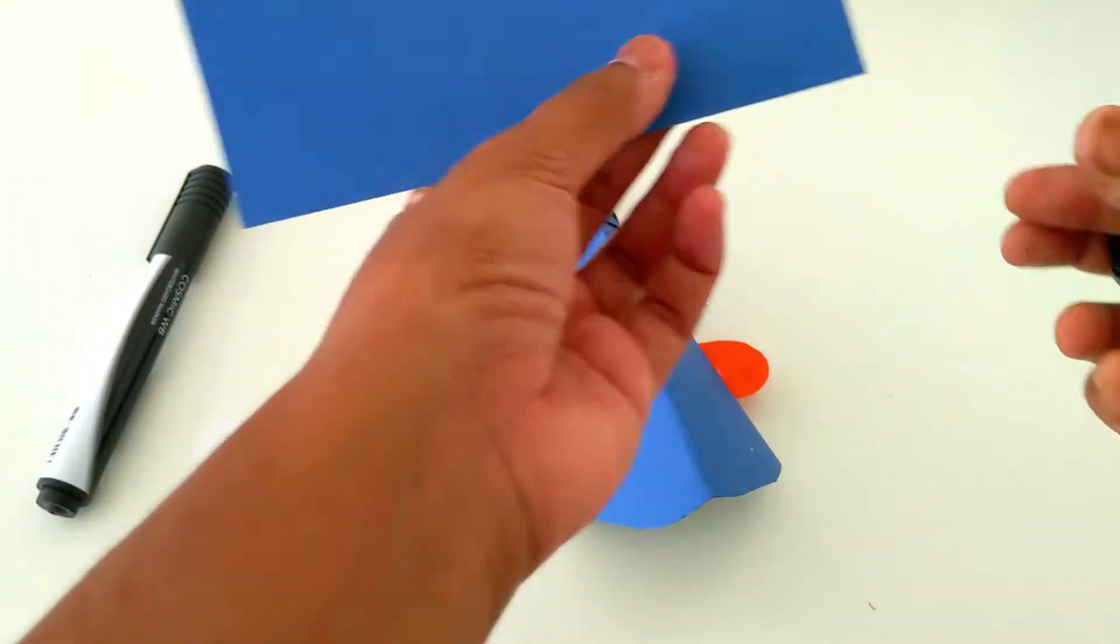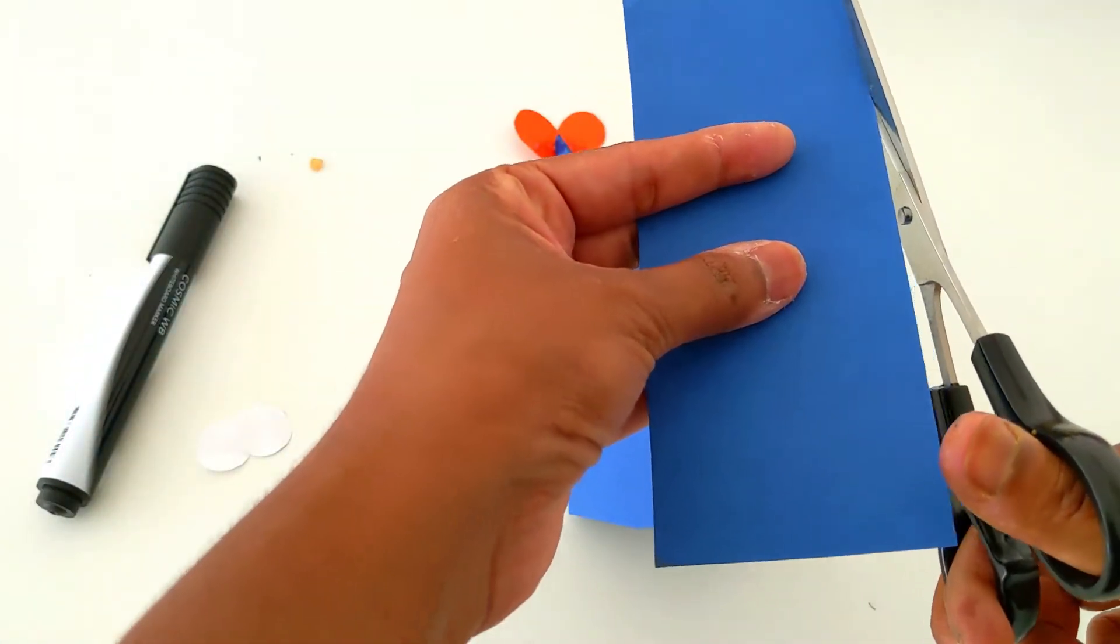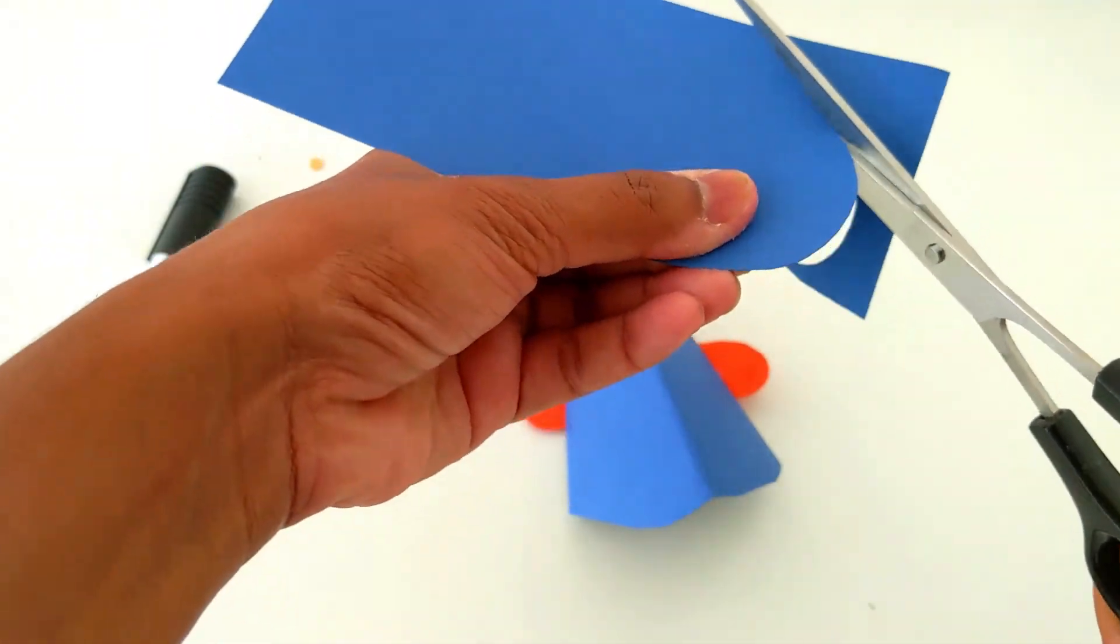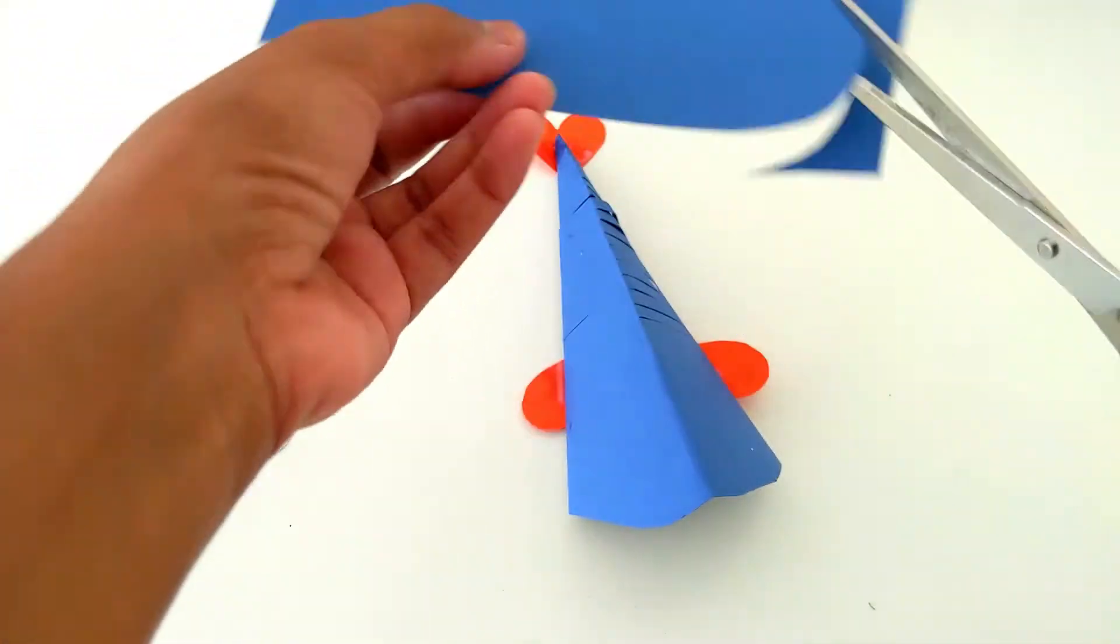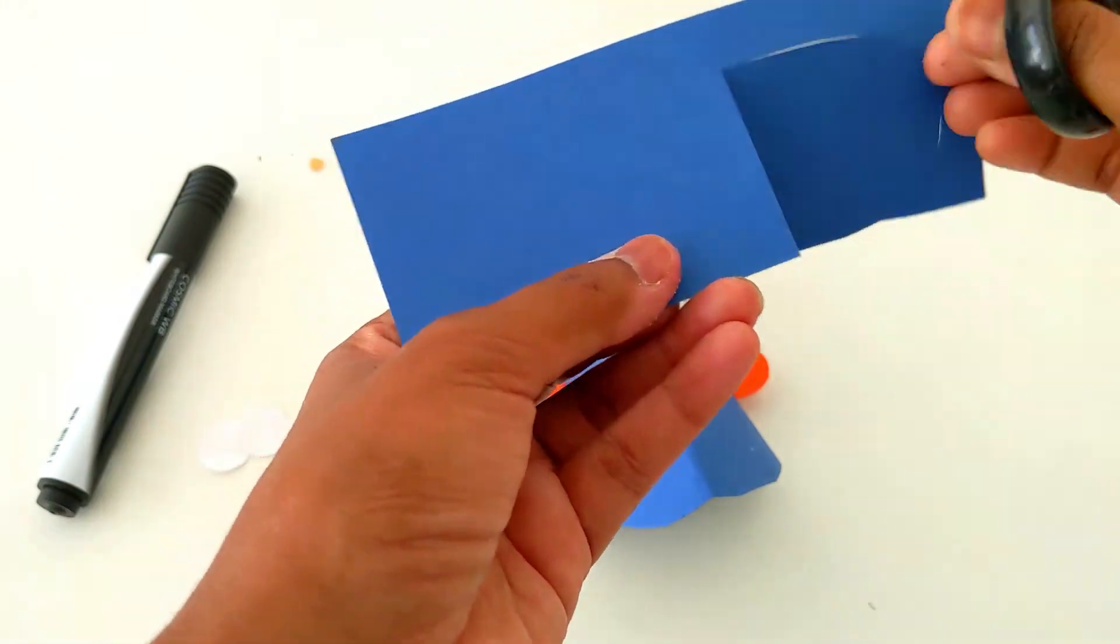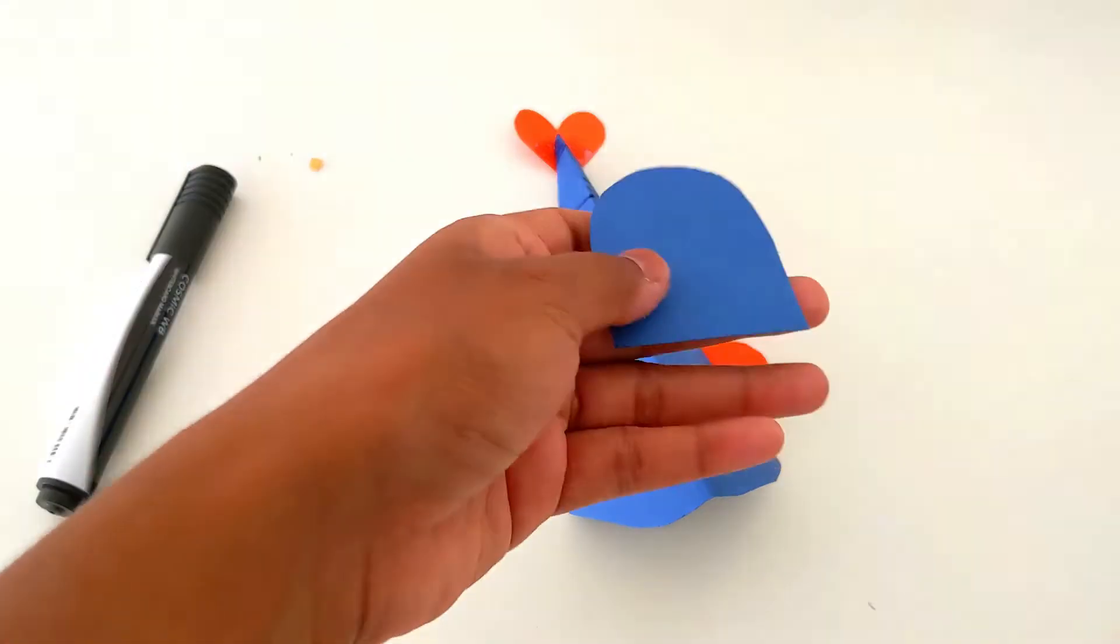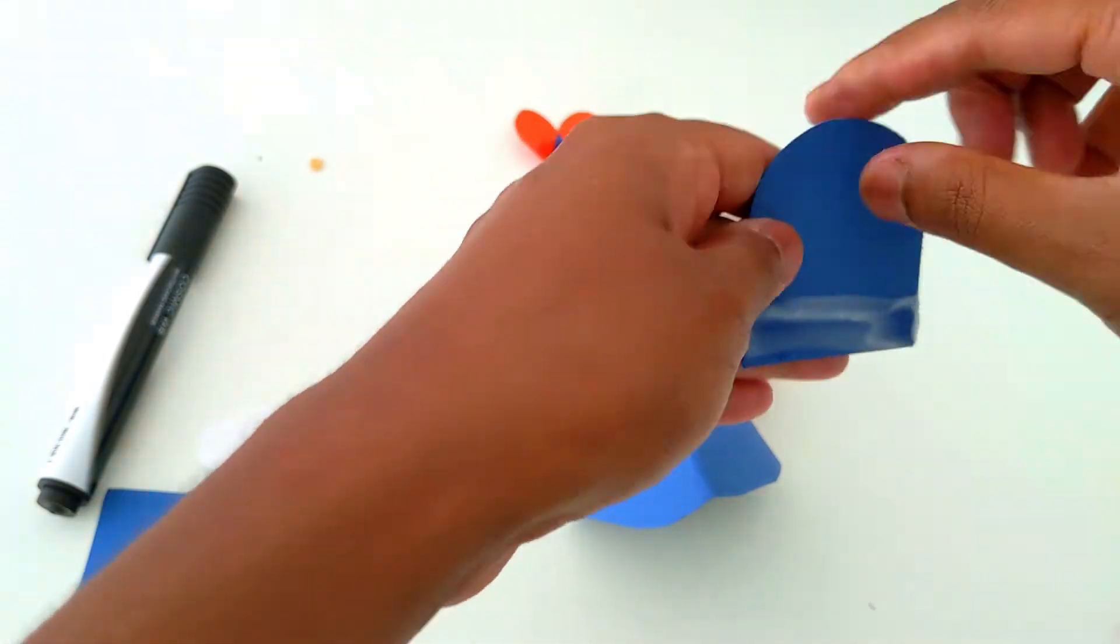Let's put the mouth. For that I'm going to cut this paper. This fish I'm actually making with card paper. You can also take normal color papers, craft papers, and make it with that.